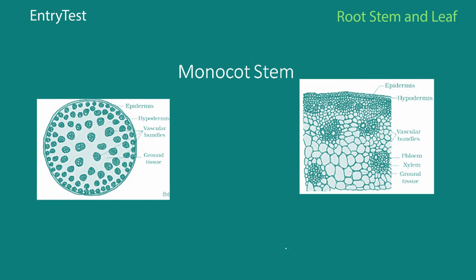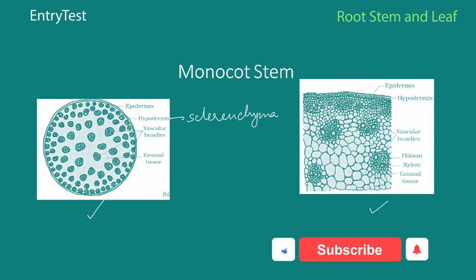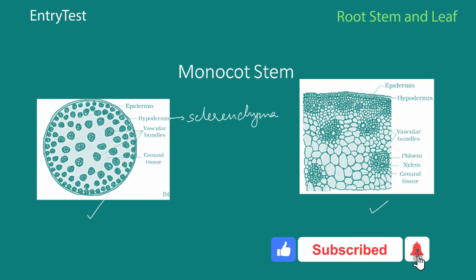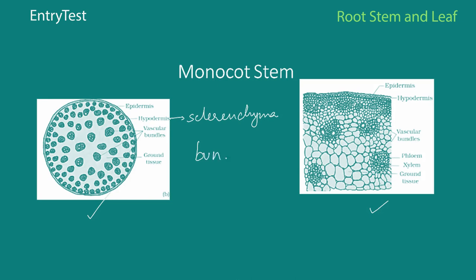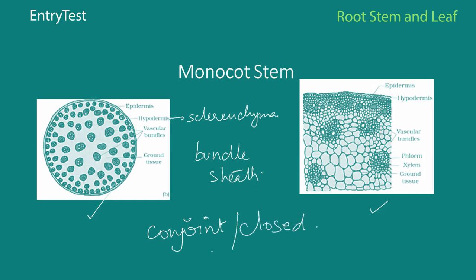The monocot stem has a hypodermis made up of sclerenchyma, next to the outermost layer which is the epidermis. Within that, the vascular bundles are scattered throughout, as seen in both diagrams. There is also ground tissue. The sclerenchyma gives rise to what is known as the bundle sheath. The vascular bundles are conjoint — meaning xylem and phloem are present together — and they are closed, not exposed from any side.